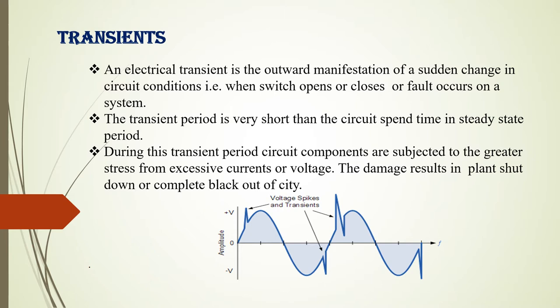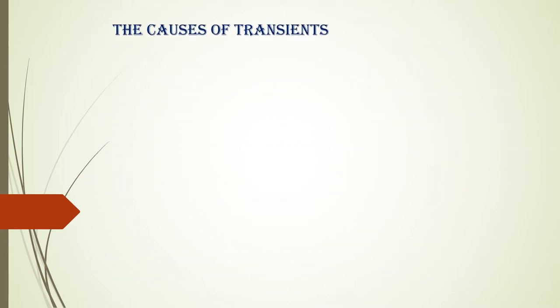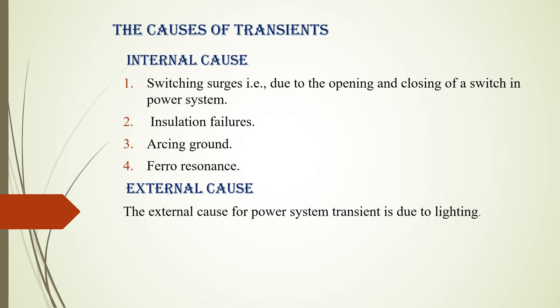What are the causes of transients? There are two major causes: internal causes and external causes. The internal causes are: first, switching surges — the opening and closing of a switch in a power system; second, insulation failures; third, arcing ground; and fourth, ferro resonance. The well-known external cause of electrical power system transients is lightning.